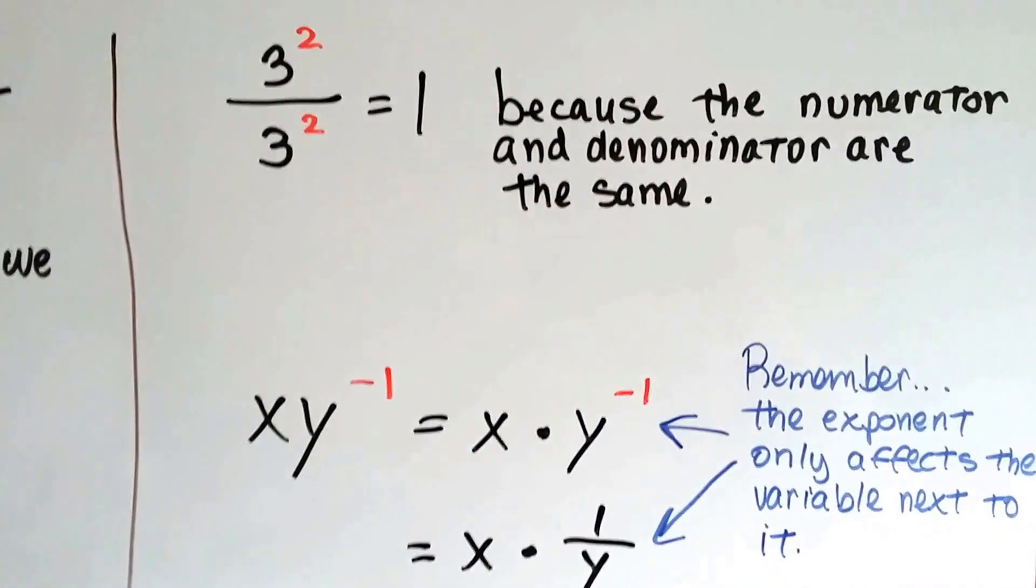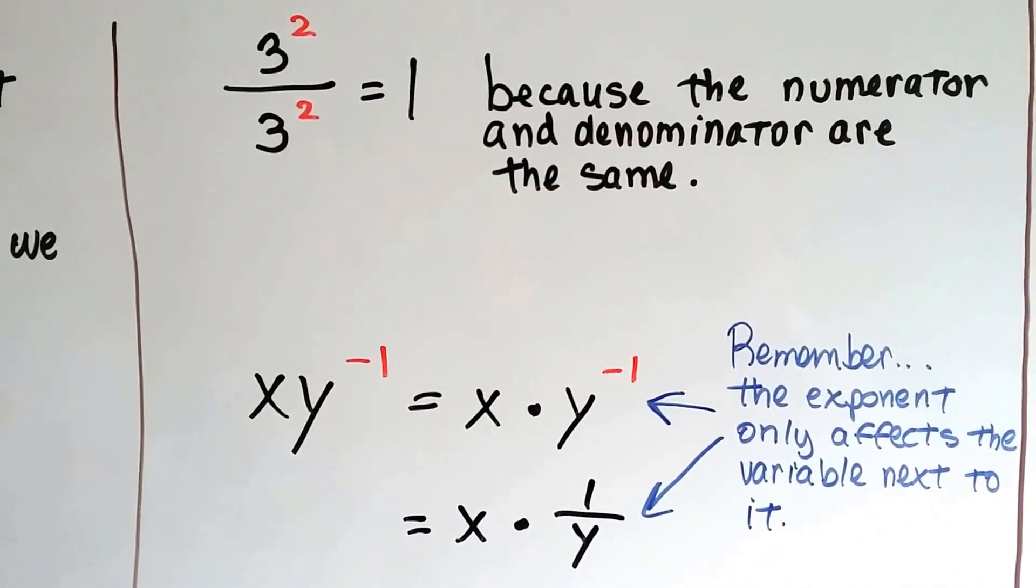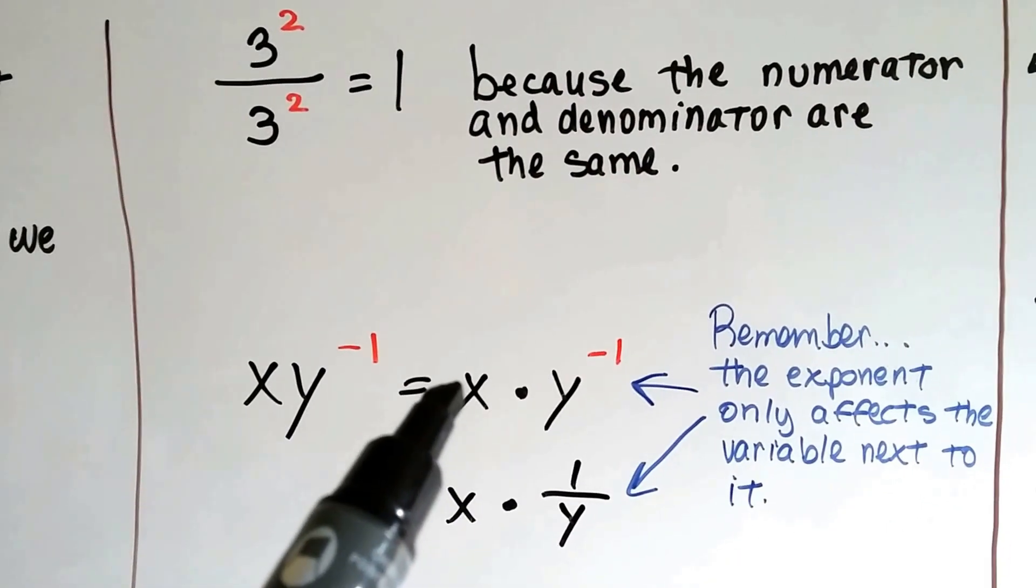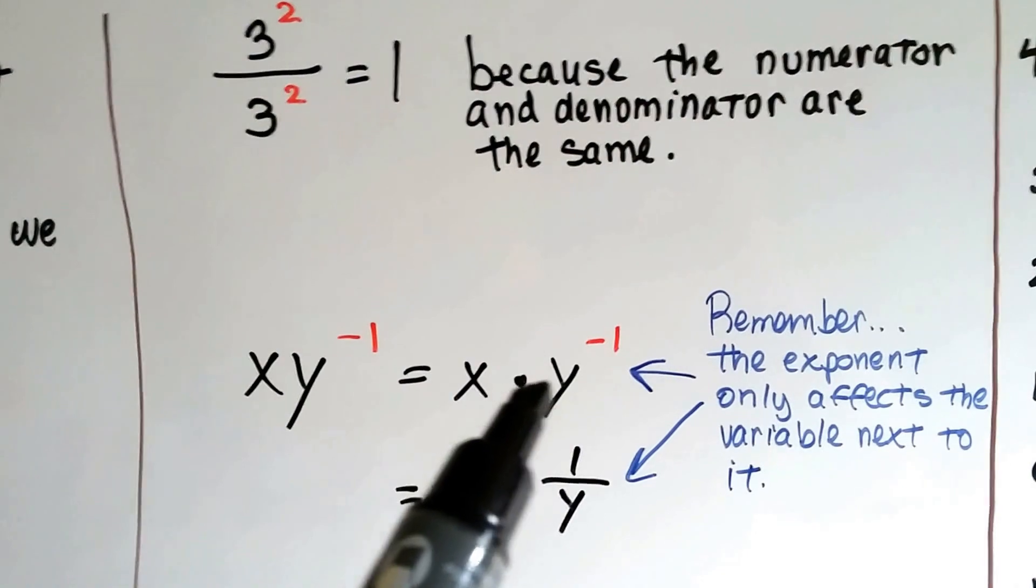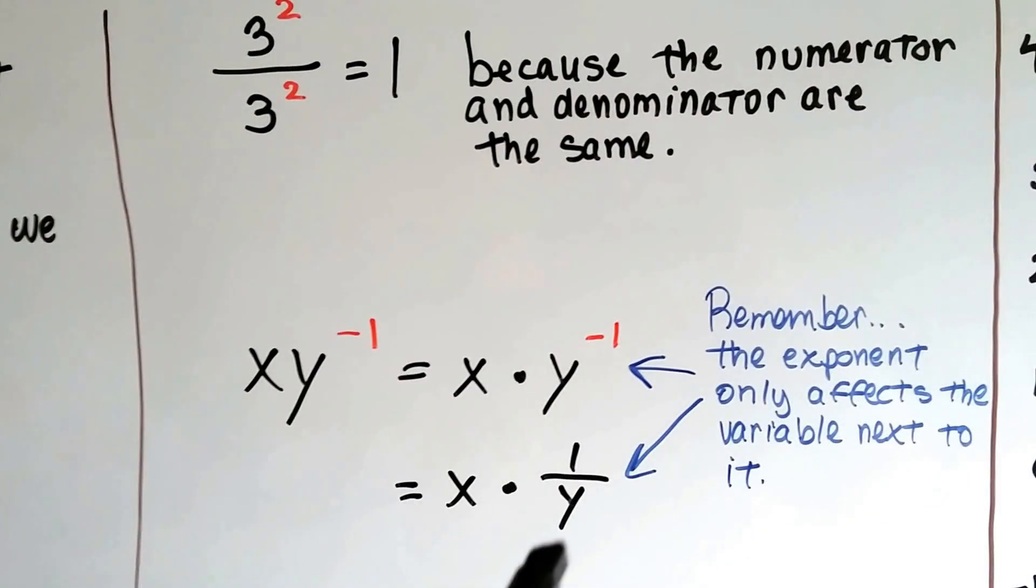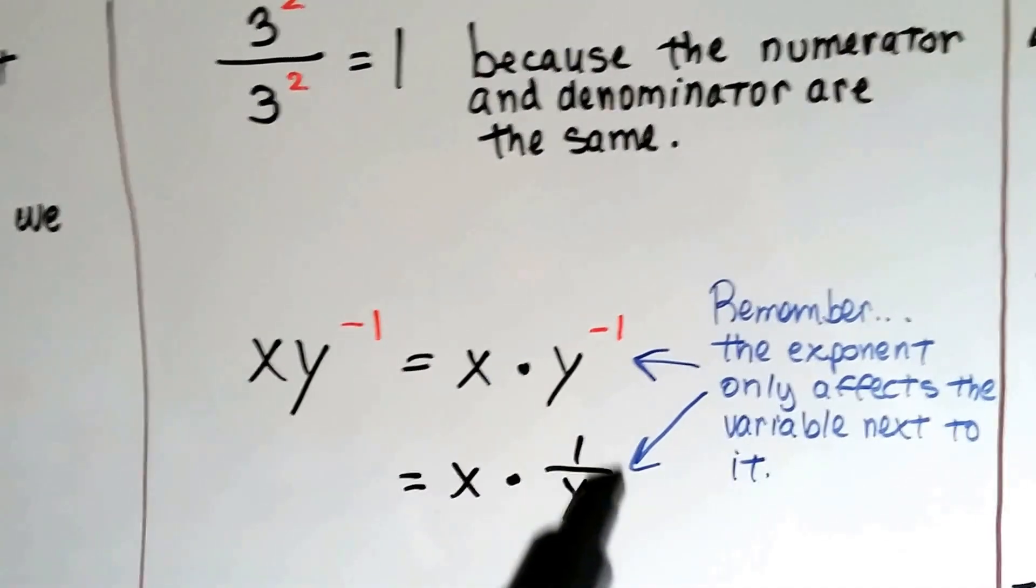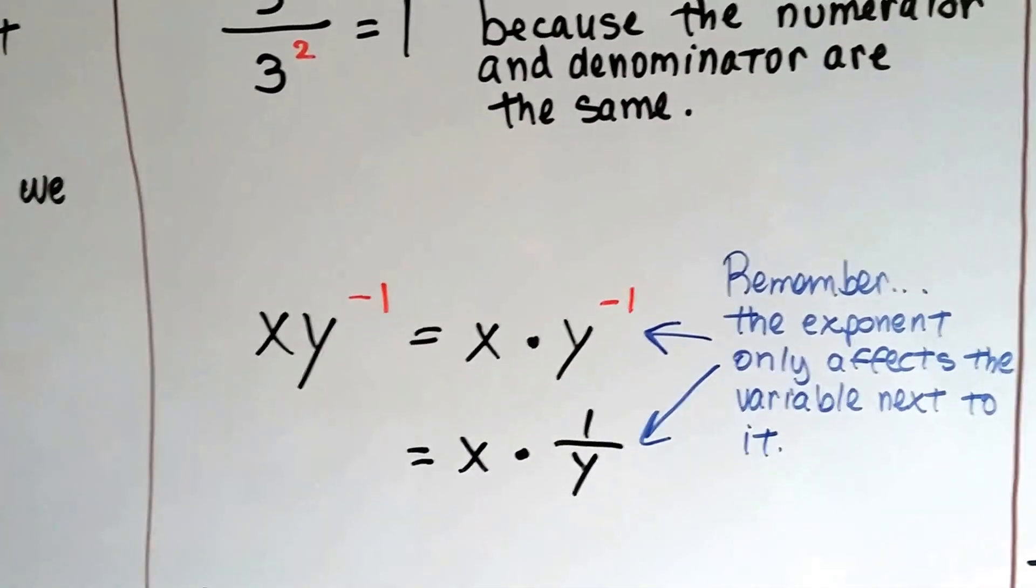And if we've got xy to the negative first power, it only affects the variable that it's next to. So x is just going to come along for the ride, and then we're going to multiply it by y to the negative first power. So the y to the negative first power is going to become positive as a fraction, and x doesn't get affected.